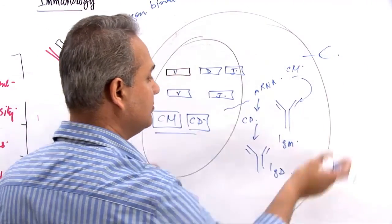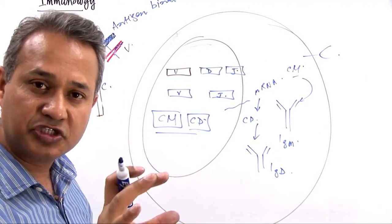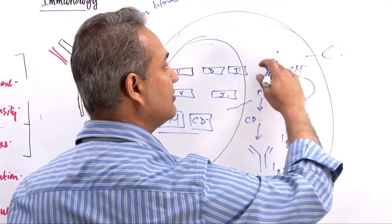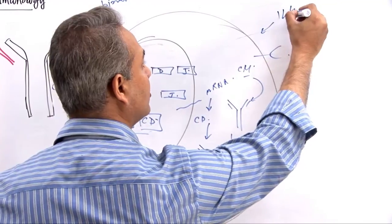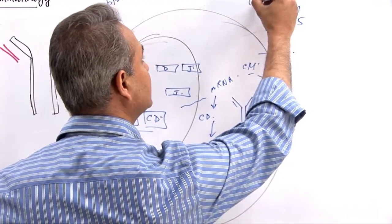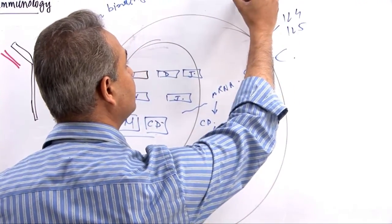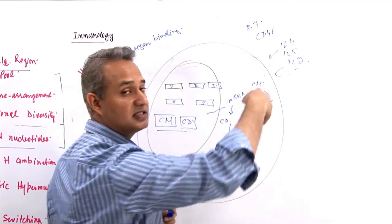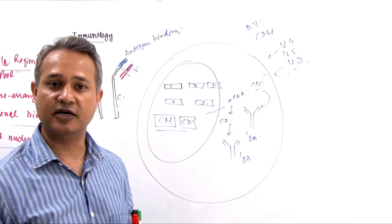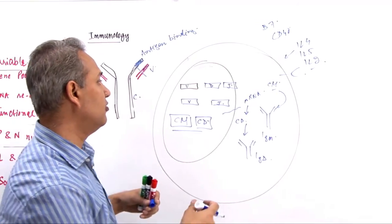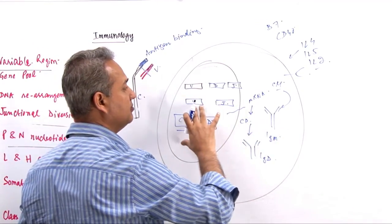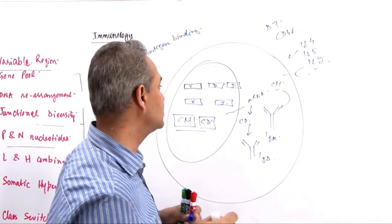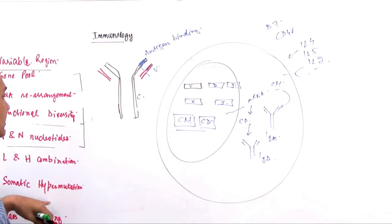That would then cause this B cell to become functional and be able to attach with some T cell and antigen. That would cause the T cell to give the signal back: IL-4, IL-5, then CD40 combination and B7 combination, with sometimes even IL-2. These combinations and signals would cause this B cell to become further proliferated. It would become differentiating as well.